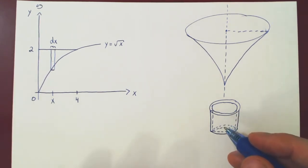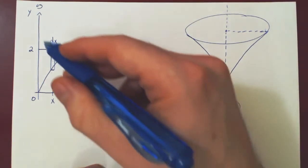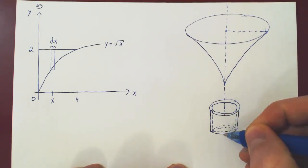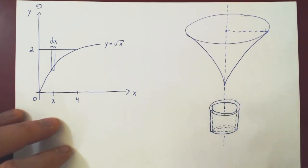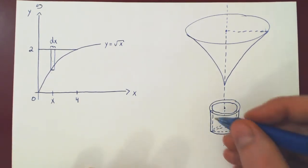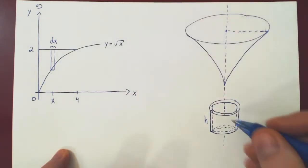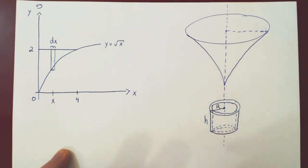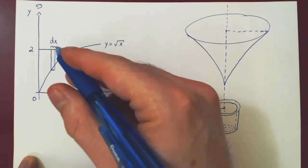We have our cylindrical shell, and as always, the center of the cylindrical shell is the axis of revolution. To find the volume of such a cylindrical shell, we need three things: the height of the shell (which is the height of the rectangle), the radius of the shell r, and the thickness of the shell — which is the width of the rectangle, dx.